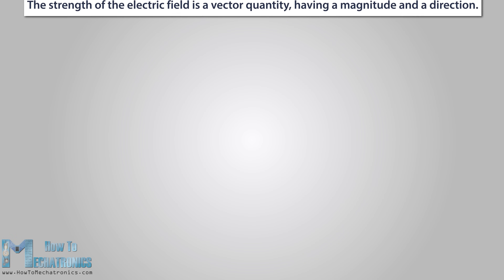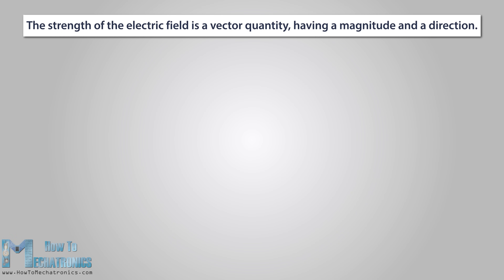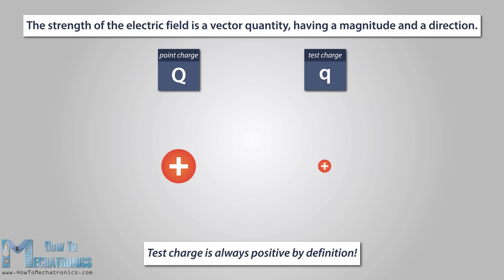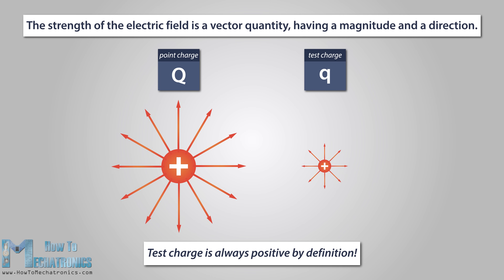The strength of the electric field is a vector quantity, having a magnitude and direction. The direction of the electric field at a point is the same direction as the force acting on a positive charge placed at that point. Let's say there is a positive point charge denoted by capital Q. To see the effect this charge has on other charges, we bring into its sphere of influence a small positive charge denoted by lower case q. We bring a small test charge because we want a value independent of the size of the test charge, depending only on the field source and the distance from the source. A test charge is always positive by definition. Both charges create an electric field, but big Q has a much larger magnitude than small q. The point charge Q modifies the space around it and sets up the electric field.